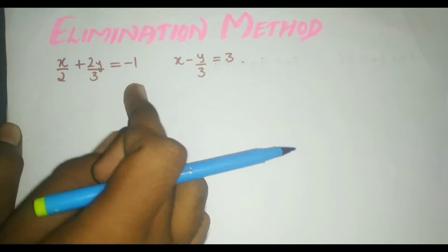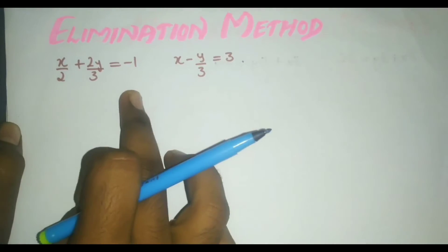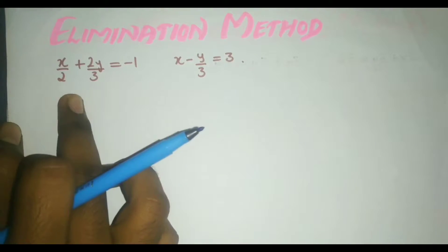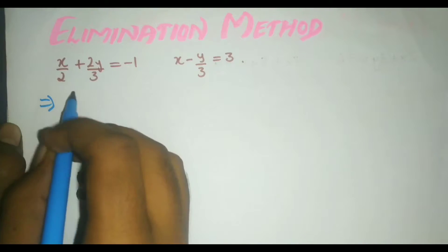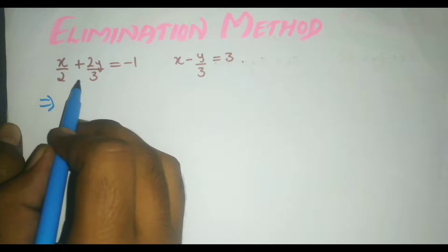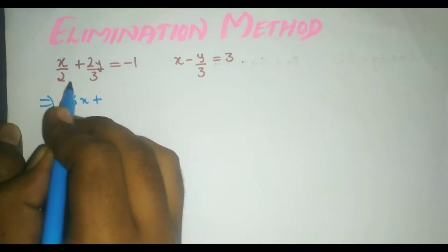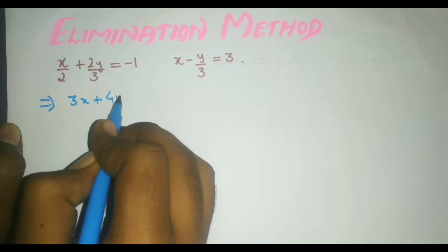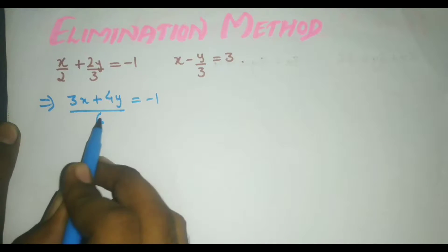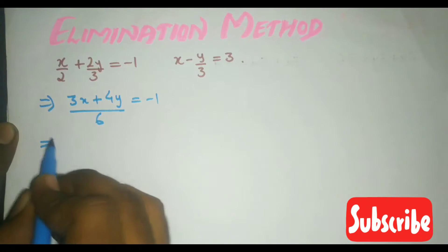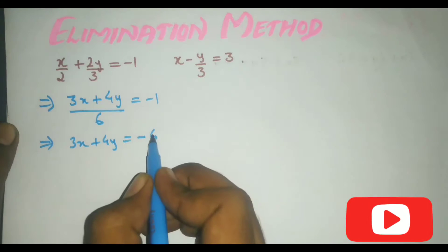The first step is to check whether the equation is in standard form. If it is not, you have to simplify it by taking LCM and so on. Taking the first equation, the LCM will be 6. Multiplying through, you get 3x plus 4y over 6 equal to minus 1. Shifting to the other side gives 3x plus 4y equal to minus 6.